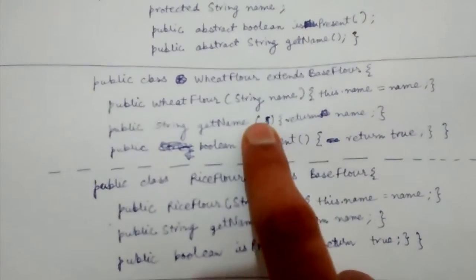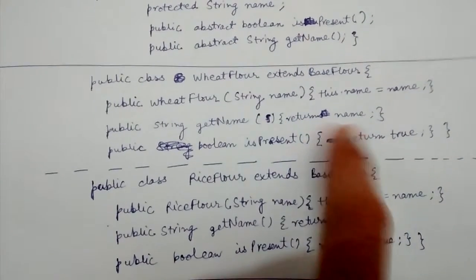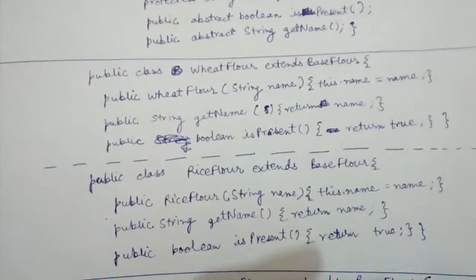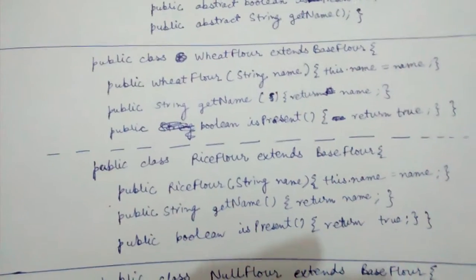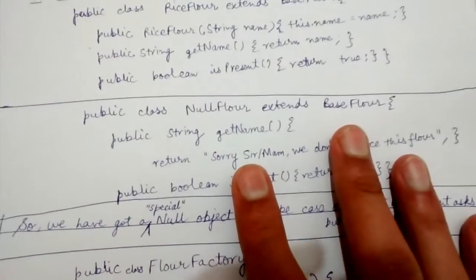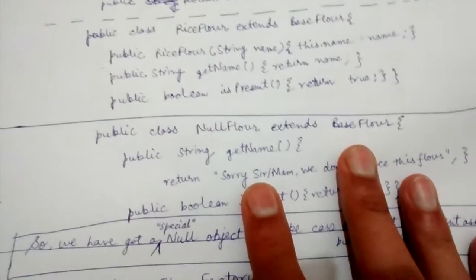The WheatFlour constructor takes a name, getName returns the name, and isPresent returns true because both of these flours are present in the flour factory.